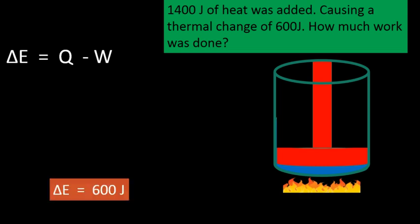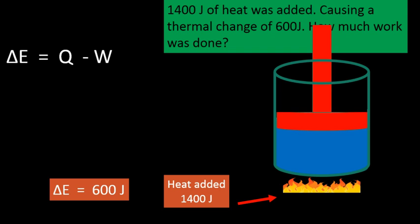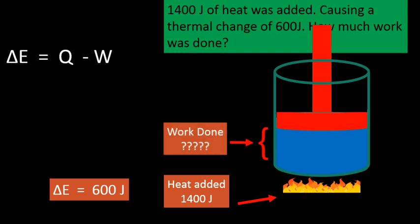So we add the heat and the outcome is 600 joules, so that's the ΔE. The heat that we added amounted to 1400 joules. It expands the liquid and moves the piston and so what we're asked to find is the amount of work that was done.